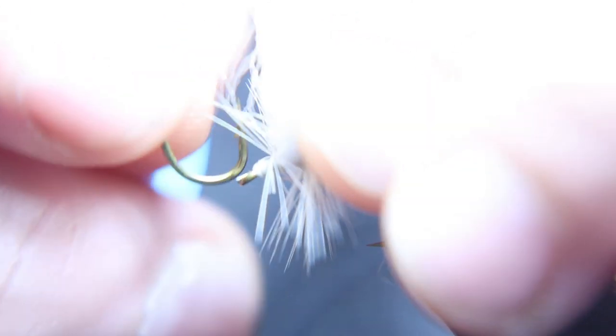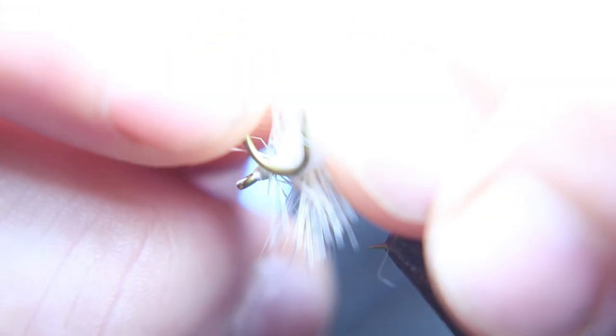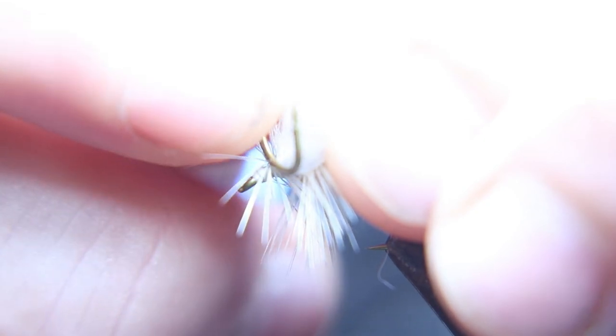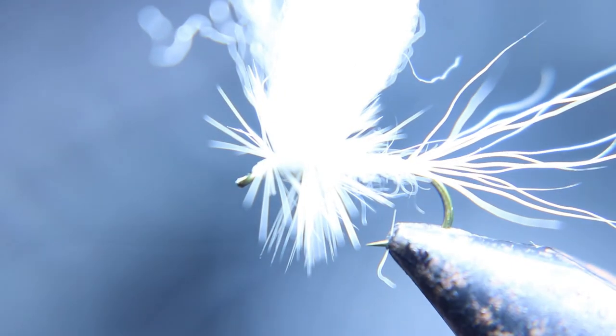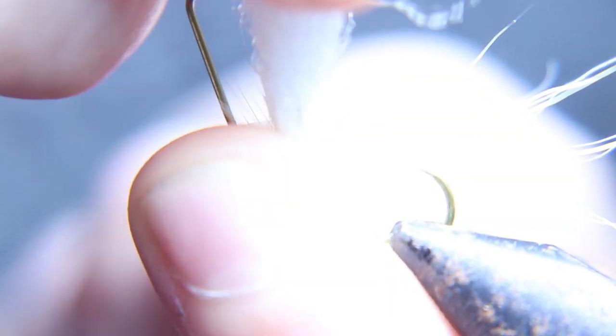To measure that length of that synthetic wing, you can always measure it by using the shank of the hook as a measuring guide. Not many tyers tell you this, but it's a secret, a little secret. Just turn another hook and use that as a guide.